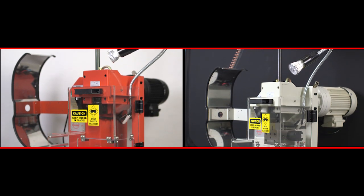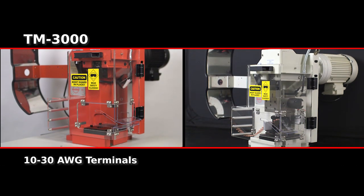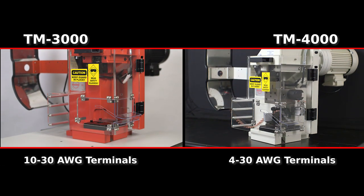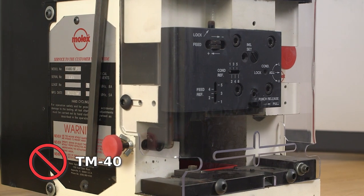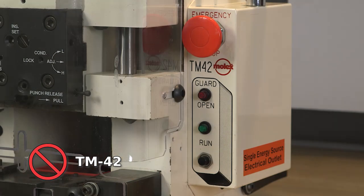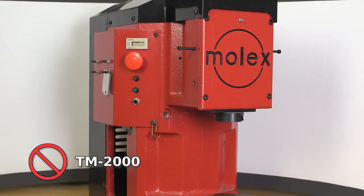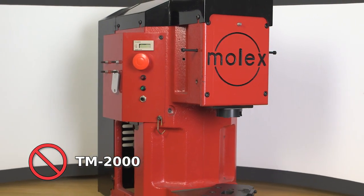This crimp module only operates in the Molex TM3000 and TM4000 universal presses. It does not fit into the Molex TM40, TM42, or TM2000 presses or other non-Molex presses.